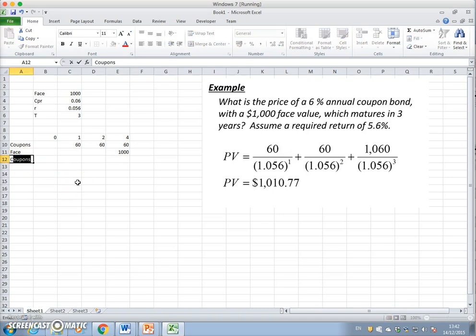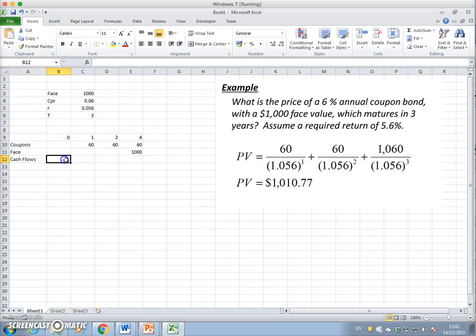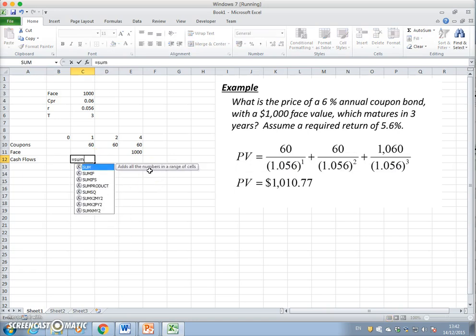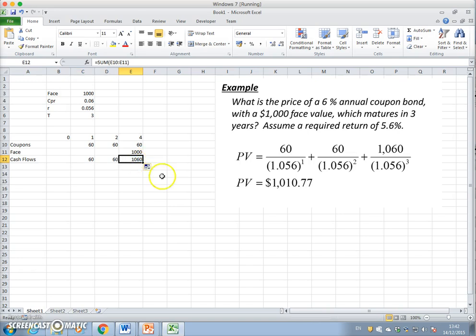Then we could think of cash flows. When we sum the cash flows of both periods - the coupons - for each time period, we see at the end the face value plus the coupon is $1,060.